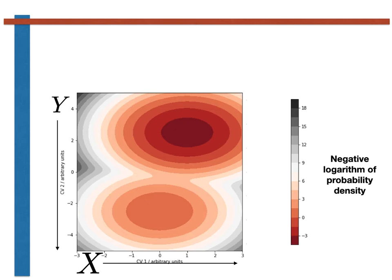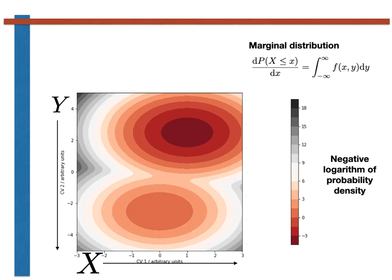Just as we could calculate a marginal distribution from a joint probability mass function and thus recover the probability mass functions for the individual variables, we can calculate marginals from the joint probability density function and thus recover the probability density functions for the individual variables. To calculate these marginals, we use the expression shown at the top of this slide. The integral on the right-hand side of this equation is equal to the probability density function for the random variable X, which is the first derivative of the cumulative probability distribution function for this random variable with respect to X.